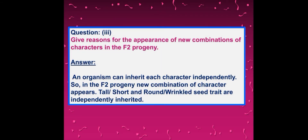Give reasons for the appearance of new combinations of characters in the F2 progeny. In the F2 progeny, new combinations of characters appear. Tall or short — the height of the plant — and round or wrinkled seed — the shape of the seed — these traits are independently inherited.